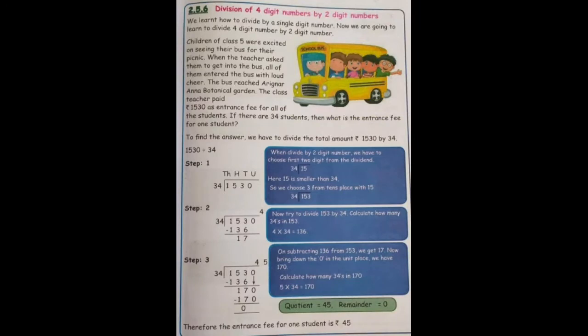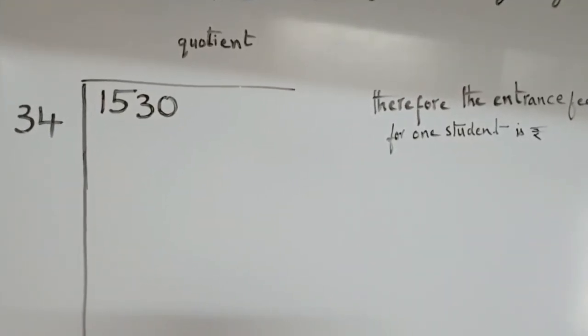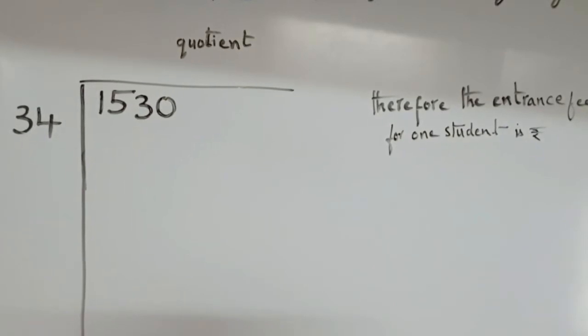Let me find out. To find the answer, we have to divide 1530 by 34. An important point to be noted here children. We have learnt how to divide by a single digit number. But now today we are going to learn how to divide by two digit numbers. Here our divisor is 34. That is the two digit number.